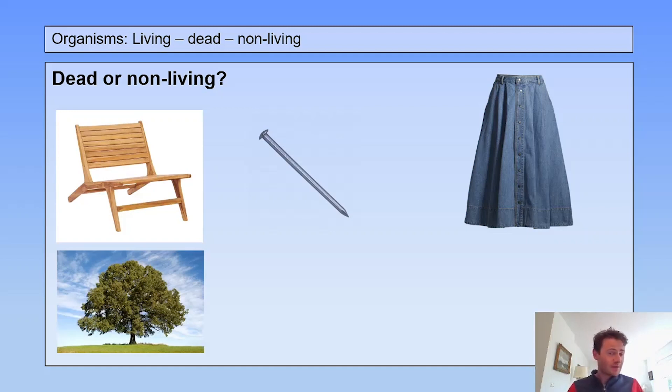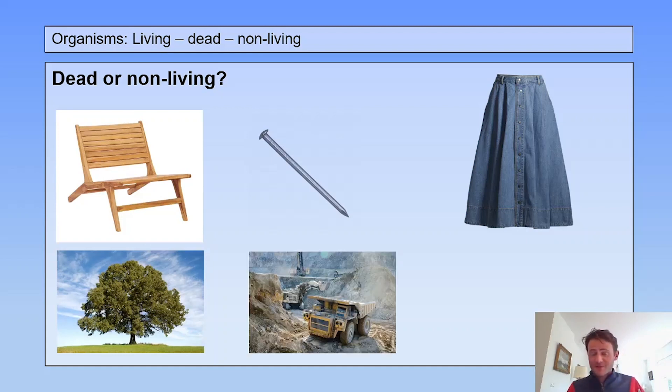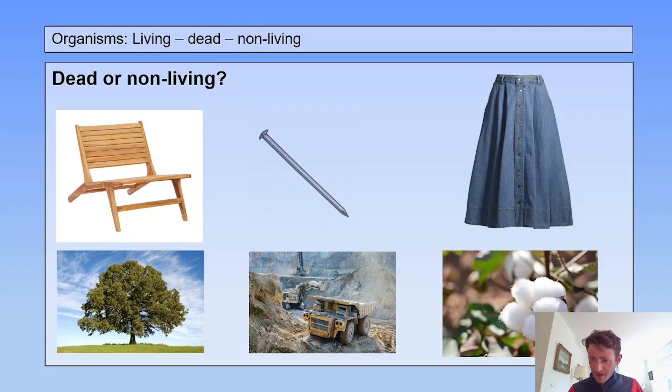The chair is made of wood and wood comes from a tree, so the chair is dead. The nail is made of steel and steel was non-living, so a nail is non-living as well. The skirt is made of cotton and cotton comes from a plant, so the material of the skirt is dead.